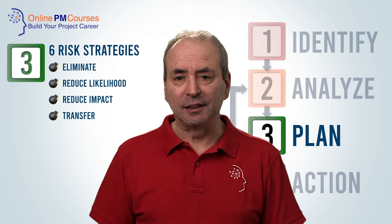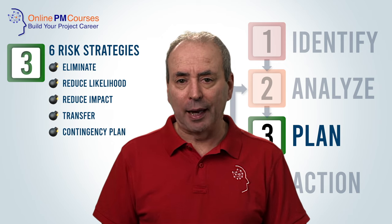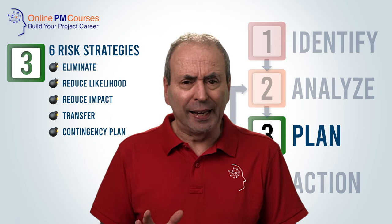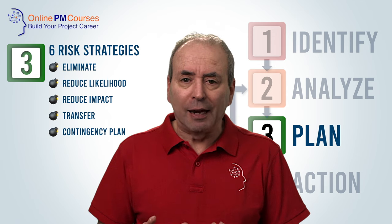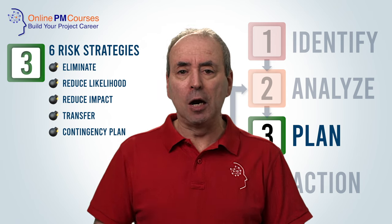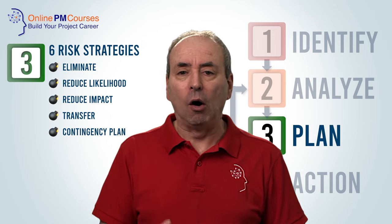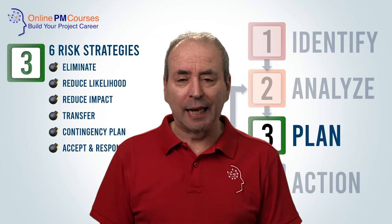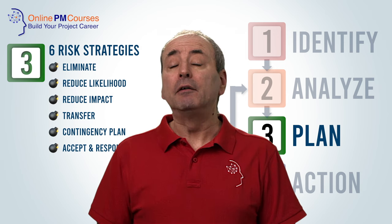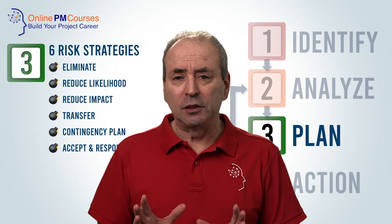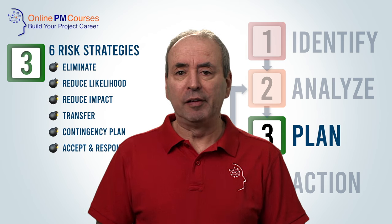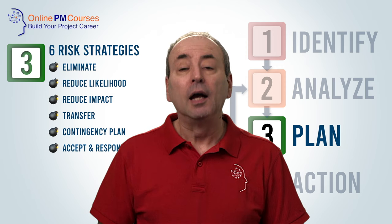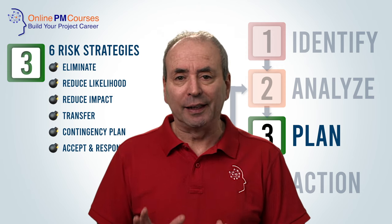The next strategy is to put in place a contingency plan. This won't make the risk any less likely to happen and it won't make it any less bad if it does, but you will have a plan for how to manage it in the moment so that you can reduce the ongoing impact. The sixth strategy is to accept the risk. If the risk is not very large, not very serious, not very likely, then none of the other strategies may be cost-effective.